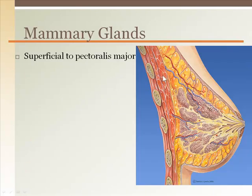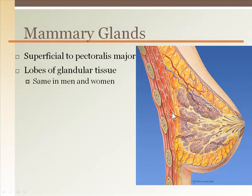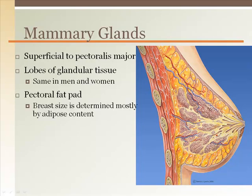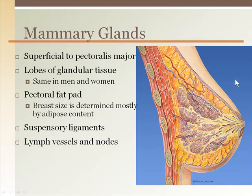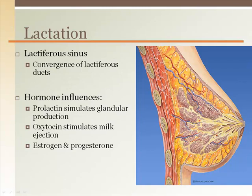Mammary glands or breasts are located on top of the pectoralis major muscle. Within the breasts are lobes of glandular tissue. Each person has the same amount of breast glandular tissue, including men. However, it is the female hormonal changes during puberty and again during pregnancy that alter the glands to be able to produce milk. Each breast sits on a pectoral fat pad and contains varying amounts of fat, which is the primary determinant of breast size. Therefore, the lactation abilities of women's breasts are not determined by their size. Breasts are held in position by suspensory ligaments, and there is also an extensive network of lymph vessels and lymph nodes.